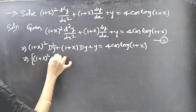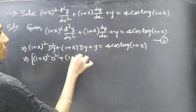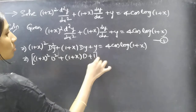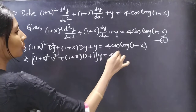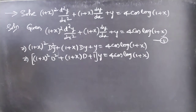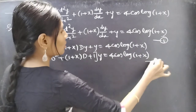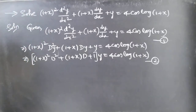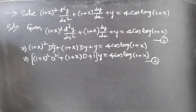We get [(1+x)²D² + (1+x)D + 1]·y = 4cos(log(1+x)). Consider this as equation 2, which is Legendre's equation in operator form D. Now we will reduce this to a linear differential equation with constant coefficients by making some substitution.